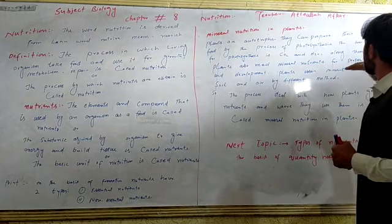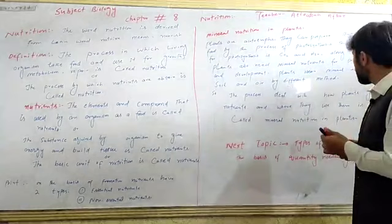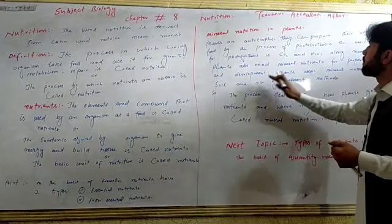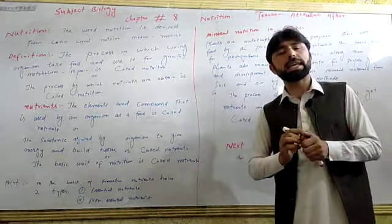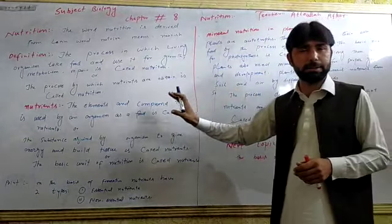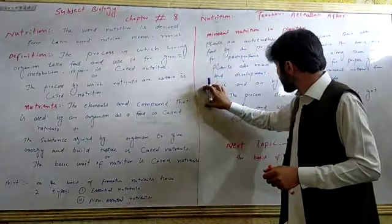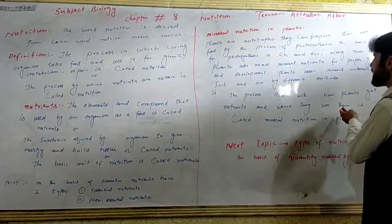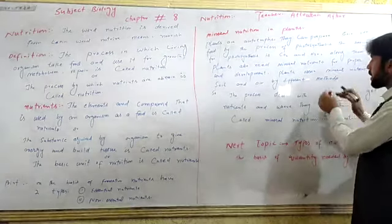Plants obtain mineral nutrients from soil and air by different methods. The process that deals with how plants get nutrients and where they use them is called mineral nutrition in plants.